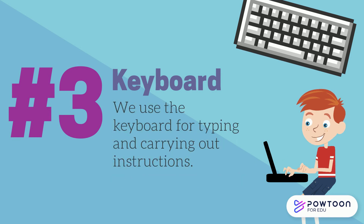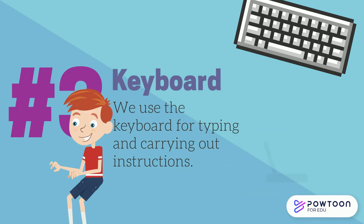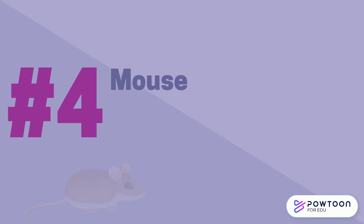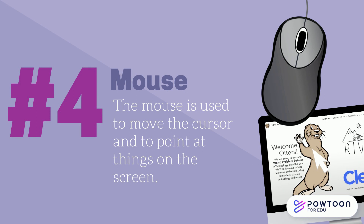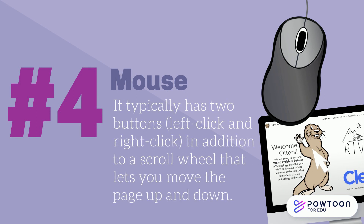The keyboard has many buttons called keys. Each key has a number, letter, symbol, or word written on it. We use the keyboard for typing and carrying out instructions. Number four is the mouse — the computer mouse is used to move the cursor and to point at things on the screen.